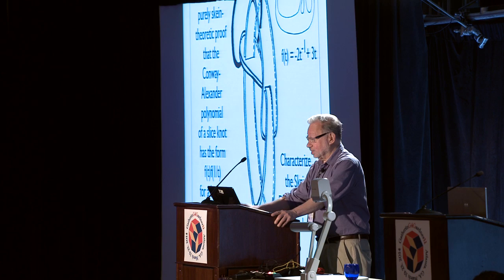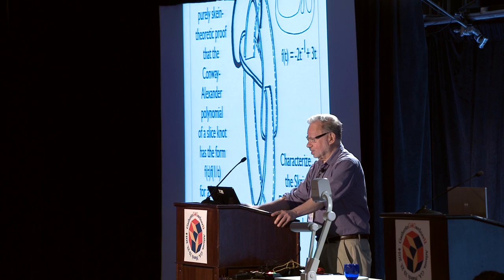I've given you another illustration where the polynomial turned out to be −2t⁻¹ + 3t, and its product with the other one gives the Conway polynomial. That brings us to 11, because 2 times 3 plus 2 plus 3 is equal to 11.